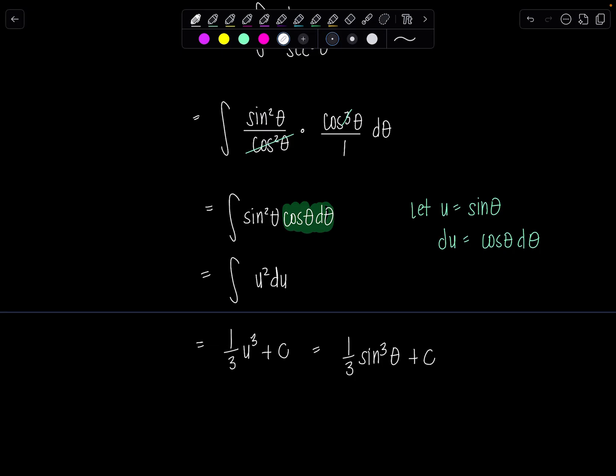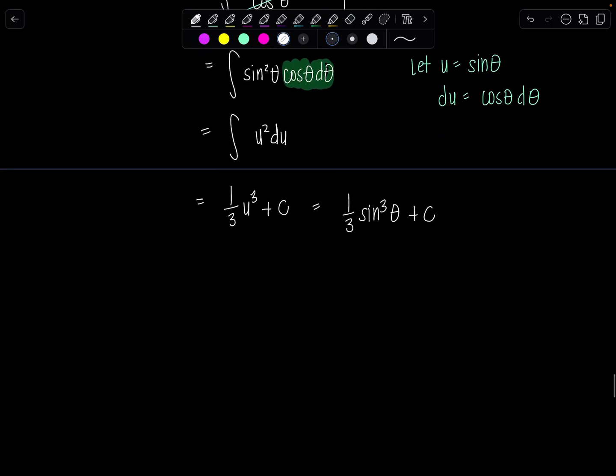And then we have to go back to the original variable of the problem which is x. So remember we made the substitution. We let x equal secant theta. Okay well that's the same as saying x over one is secant theta. So it's triangle time.